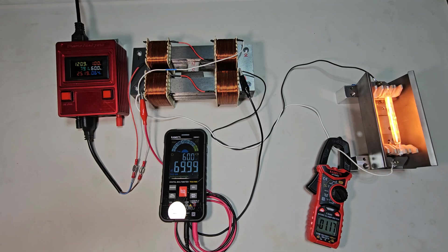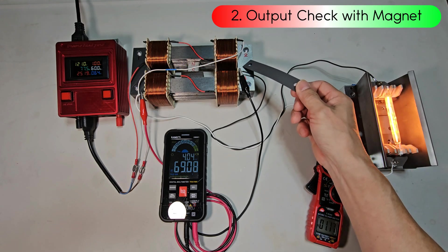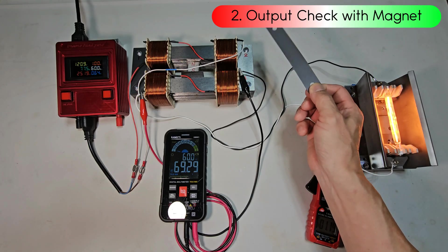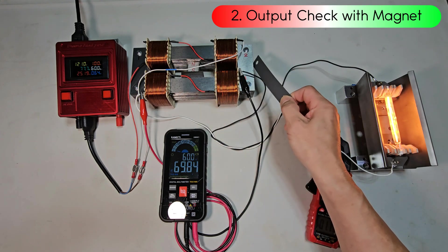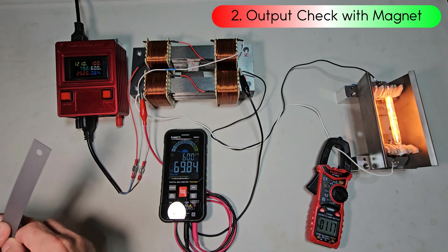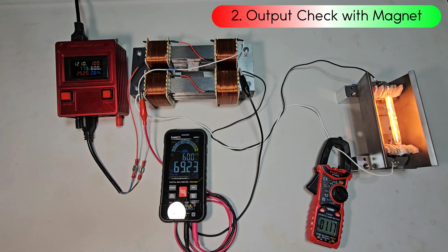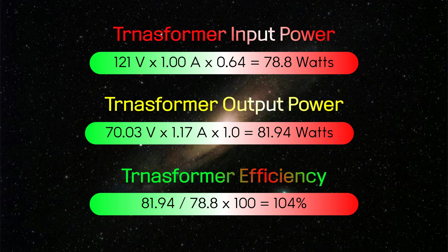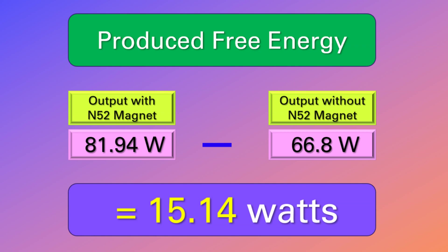Let's measure the magnet-assisted transformer. The N52 magnet is installed inside the transformer, which causes the magnetic flux to saturate and leak out of the silicon steel. As a result, the silicon steel reacts and makes noise. This is the performance data of a magnet-assisted transformer. As seen above, the output voltage had little effect, but the current was amplified due to the influence of the magnet. Although there are some deficiencies in this experiment, it can be said that the N52 magnet played a meaningful role in the production of free energy.